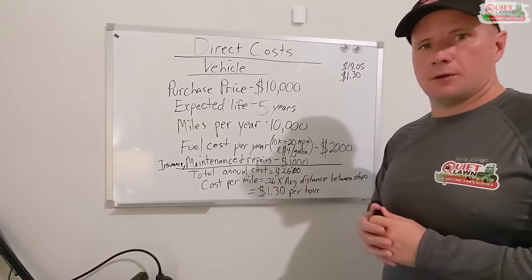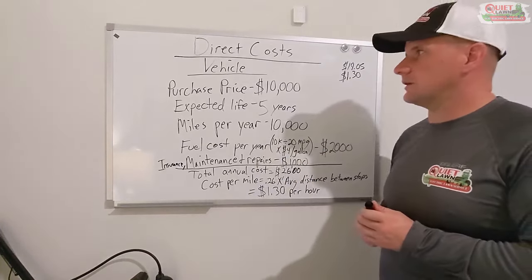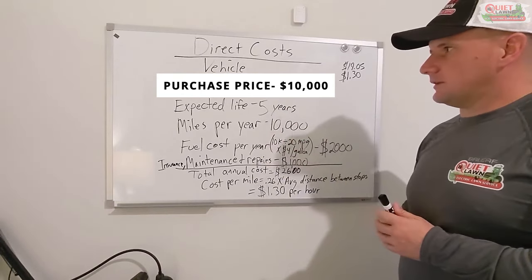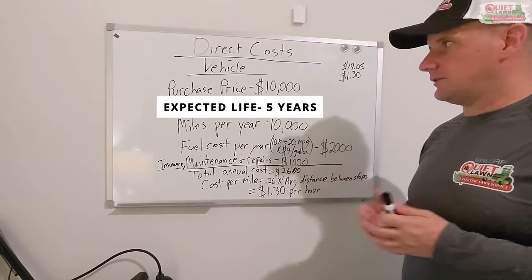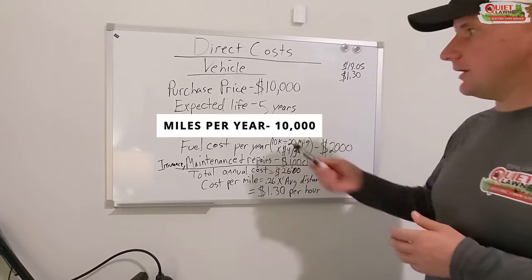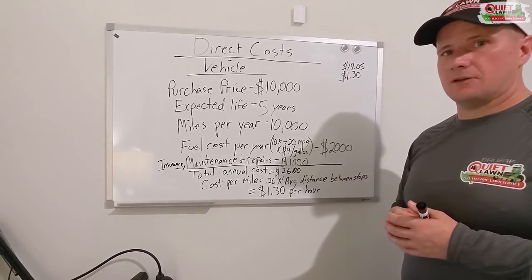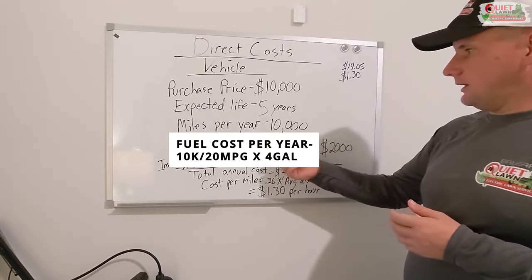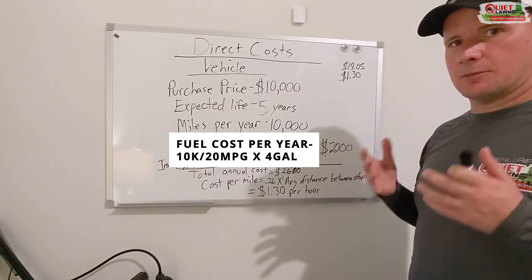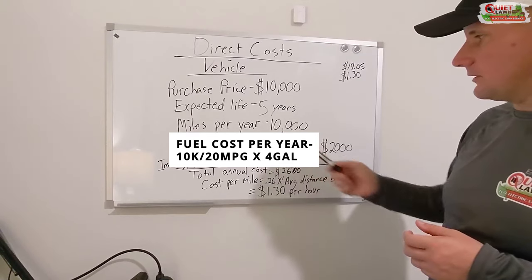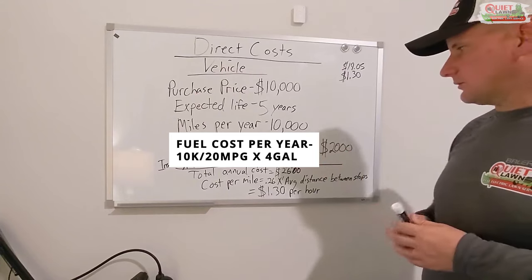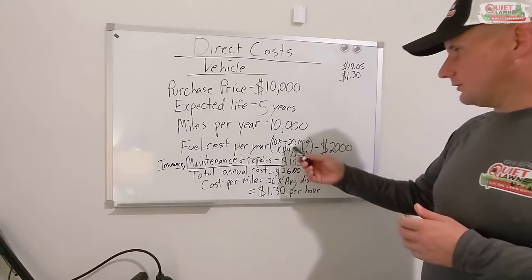So let's look at our vehicle — this would be your mowing truck. First, we're going to take the purchase price. We'll use an example and say we purchased the vehicle for $10,000. The expected life — let's say this vehicle is going to last five years minimum. Average miles per year — let's say you're going to be driving 10,000 miles a year. Fuel cost per year is a simple calculation: total miles divided by miles per gallon. Let's say you drive 10,000 miles and your vehicle gets 20 miles to the gallon, and average price per gallon is about $4. That comes to about $2,000 a year on fuel.